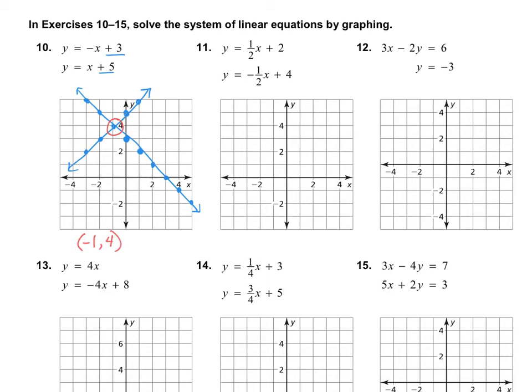And now it's always good just to plug it back in to make sure that that actually is the answer. So if I plug it back into my original equation, we have -(-1) + 3 should equal my y, which is 4. And that does work. And on the other one, we have 4 is equal to -1 + 5, which also works. So since it checks out with both, we know our answer is correct.